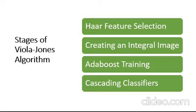The Viola-Jones algorithm has four stages: Haar feature selection, creating an integral image, AdaBoost training, and cascading classifier.